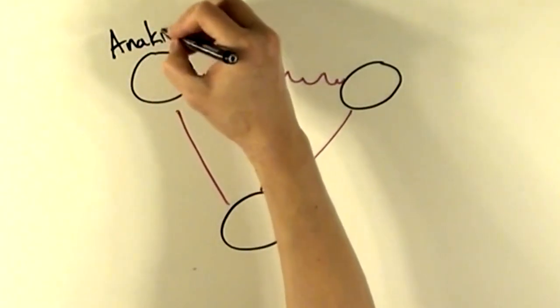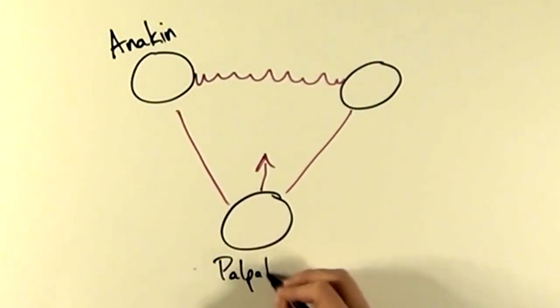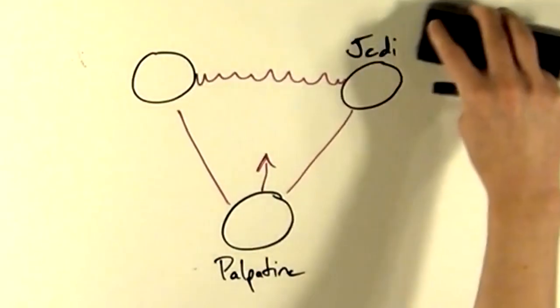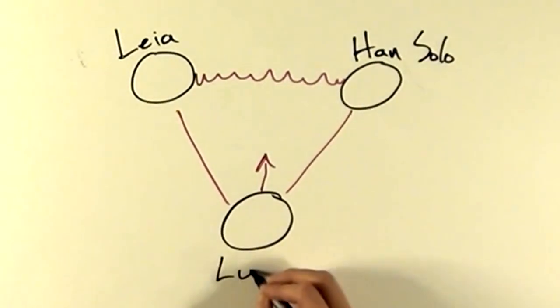As an example from Star Wars, Anakin Skywalker complains to Emperor Palpatine about the Jedi Council. Another example from Star Wars, when Princess Leia argues with Han Solo, she kisses Luke Skywalker. These are all examples of triangles.